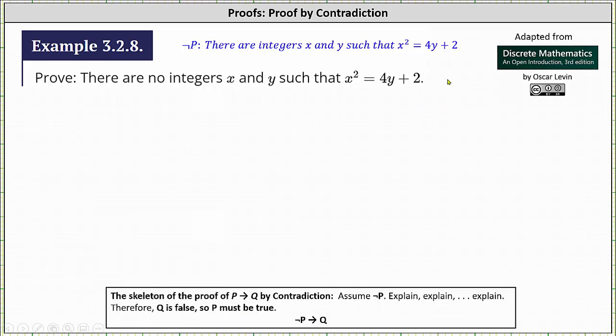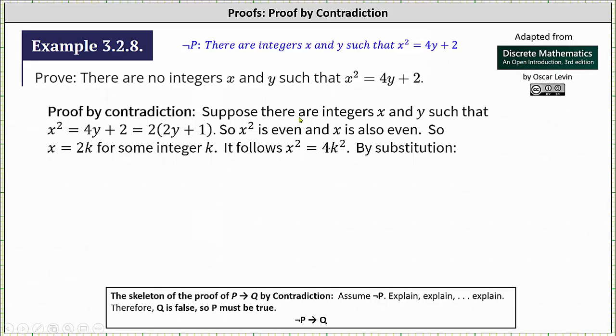So to begin the proof by contradiction, we suppose there are integers x and y such that x squared is equal to 4y plus 2. We can factor 2 from the right side of the equation, which gives us x squared equals 2 times the quantity 2y plus 1.